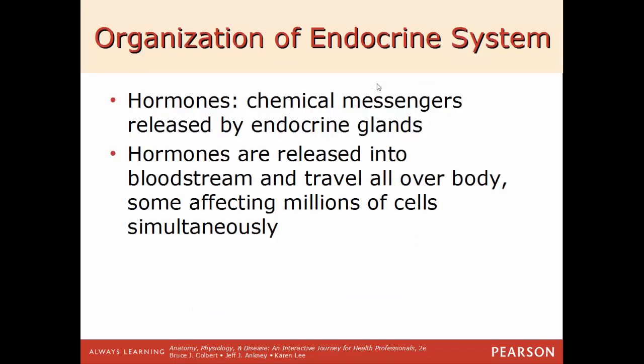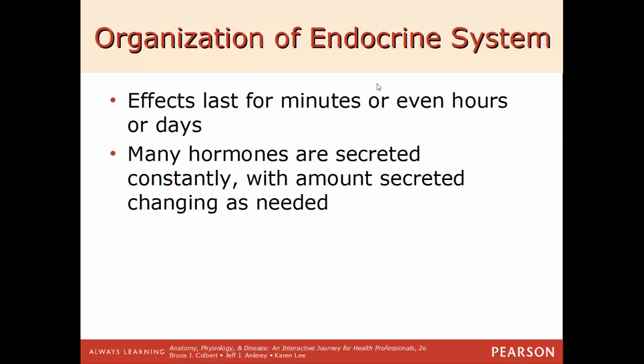Hormones are chemical messengers released by endocrine glands into the bloodstream, traveling all over the body. Because they travel through the blood's entire network, they can affect sometimes millions of cells at the same time — assuming those cells have the right receptor for that hormone. The effects of hormones can be as short as a few minutes or as long as several hours or even days. Many hormones are secreted constantly, with the amount secreted changed as needed — turned up or turned down.